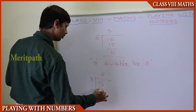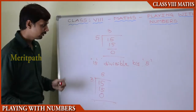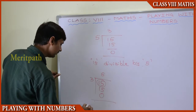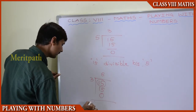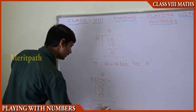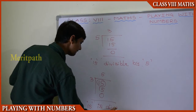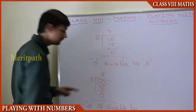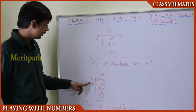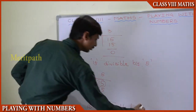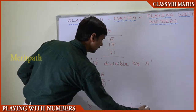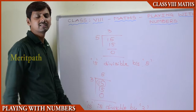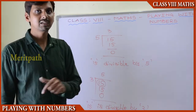Here the dividend is 15. The number we divided by is 3, so we call 15 is divisible by 3 as well. This is the property of divisibility.